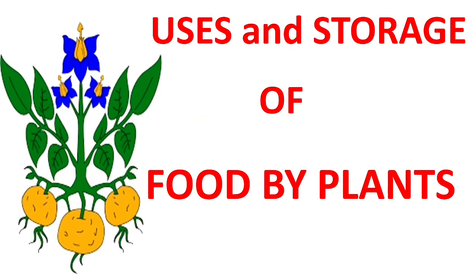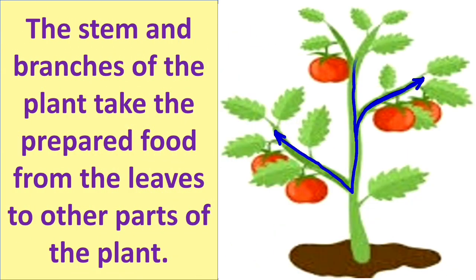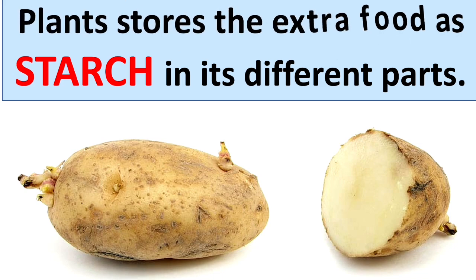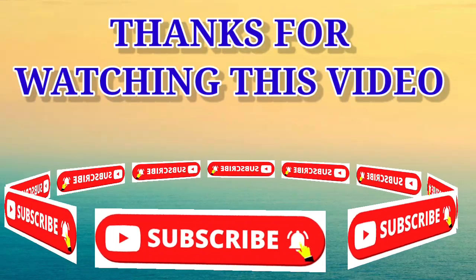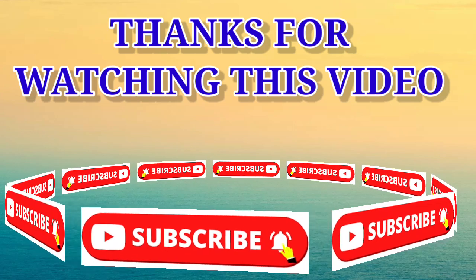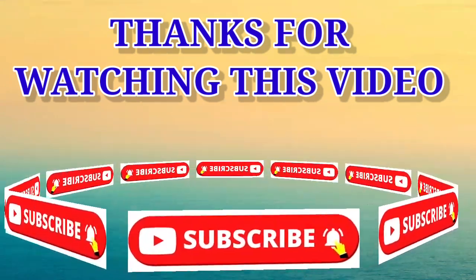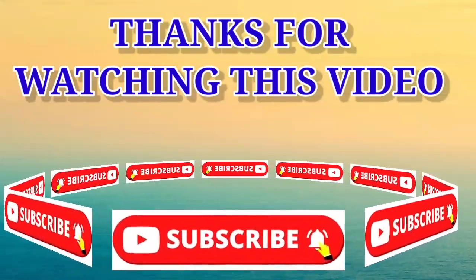Next is uses and storage of food by plants. The stem and branches of the plant take the prepared food from the leaves to other parts of the plant. Extra food is stored in various parts of plants like leaves, stem, roots, and fruits. So this was all about green plants and I hope you liked this video. If you liked it, please subscribe to my channel and also hit the bell icon so that you don't miss more interesting videos.